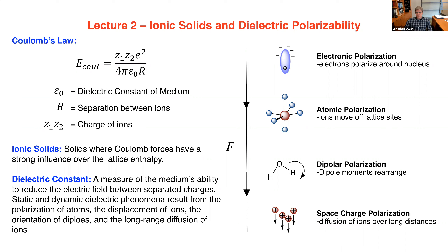The last type is space charge polarization — really just diffusion of ions within a solid. The lead halide perovskites are famous for this: bromide or the counter-ion will diffuse across the crystal in response to a voltage, and that diffusion acts to counter the voltage. The polarization and motion of ions acts to reduce the energy of the system and oppose the applied electric field. All these motions — electrons, atoms, molecules, and ions — contribute to the dielectric properties and affect the Coulomb potential in a solid.